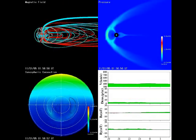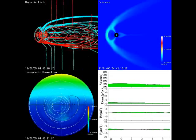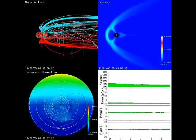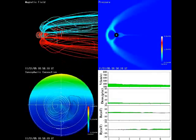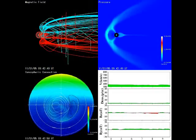Li's colleague Jimmy Raeder, also of New Hampshire, says 10 to the 27 particles per second were flowing into the magnetosphere. That's a 1 followed by 27 zeros. This kind of influx is an order of magnitude greater than what we thought was possible.